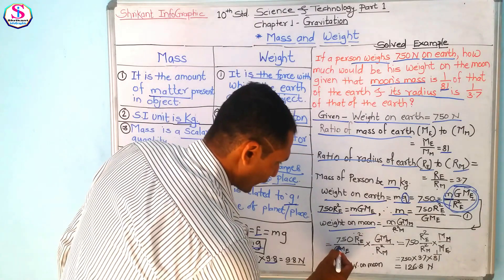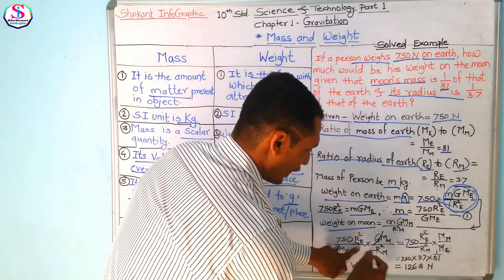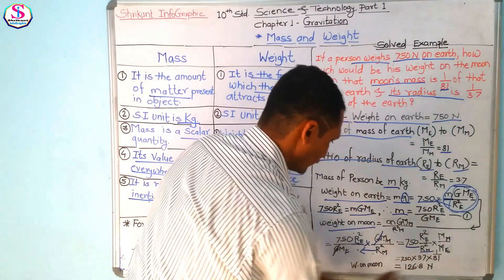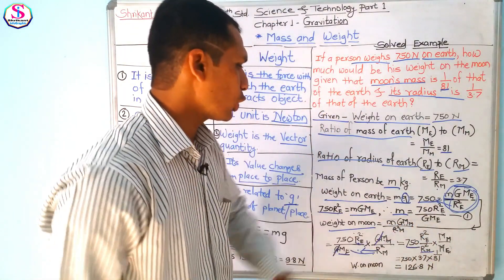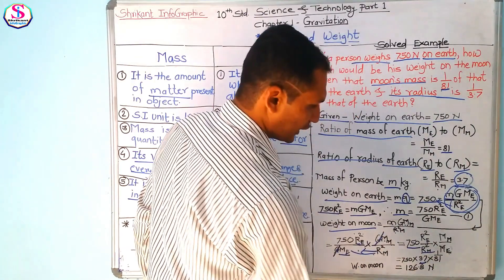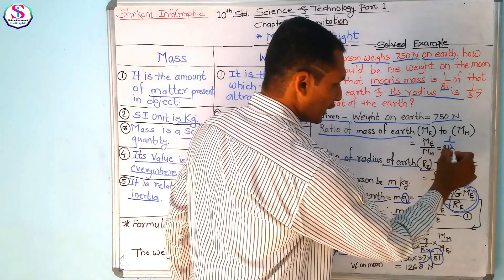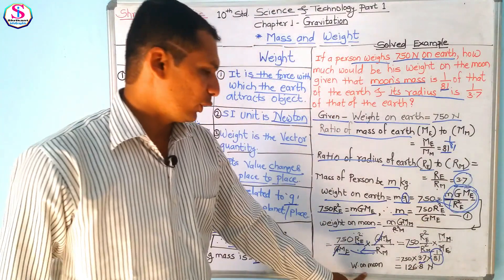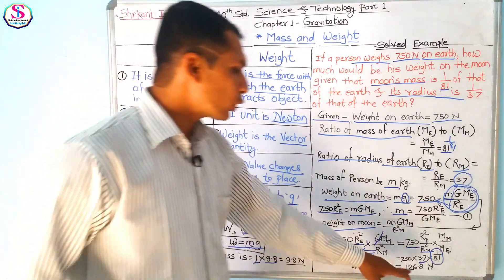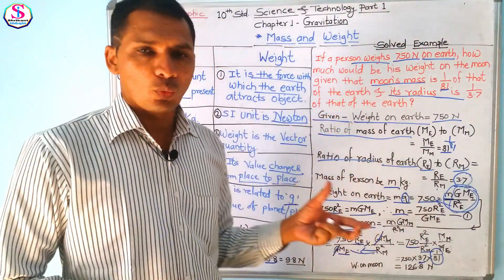After substituting the ratio R squared_E divided by R squared_M equals 3.7 squared and mass of moon to mass of earth equals 1/81, the weight on the moon comes out to approximately 126.8 Newtons. So the weight on the moon is approximately one-sixth of the weight on earth.